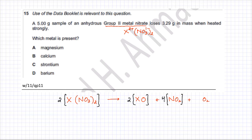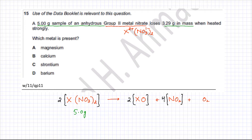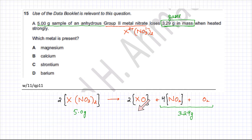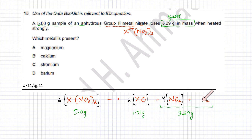The question gives a 5 gram sample of the anhydrous group 2 metal nitrate. It loses 3.29 grams in mass, which corresponds to the gases (NO₂ and O₂) that escape. Subtracting 3.29 from 5 gives 1.71 grams — that is the solid metal oxide remaining after decomposition.